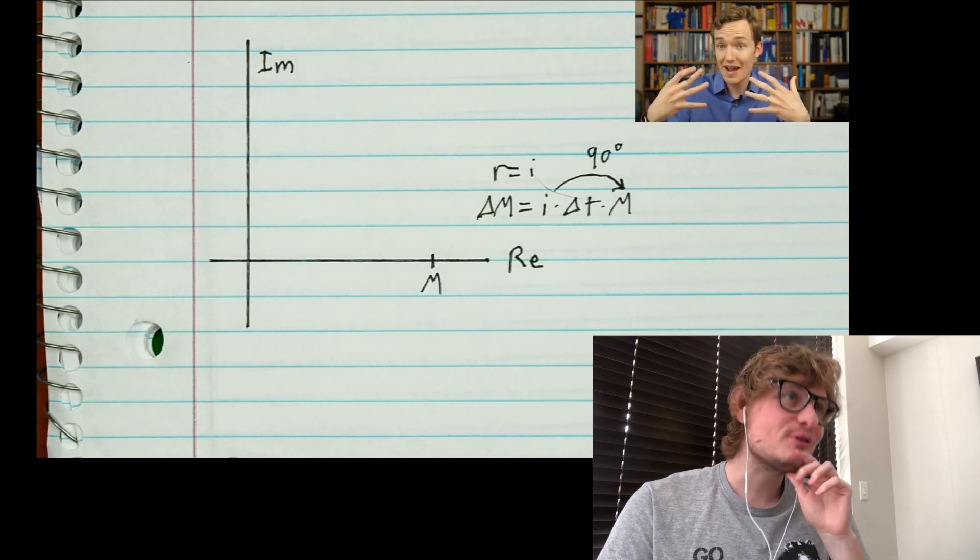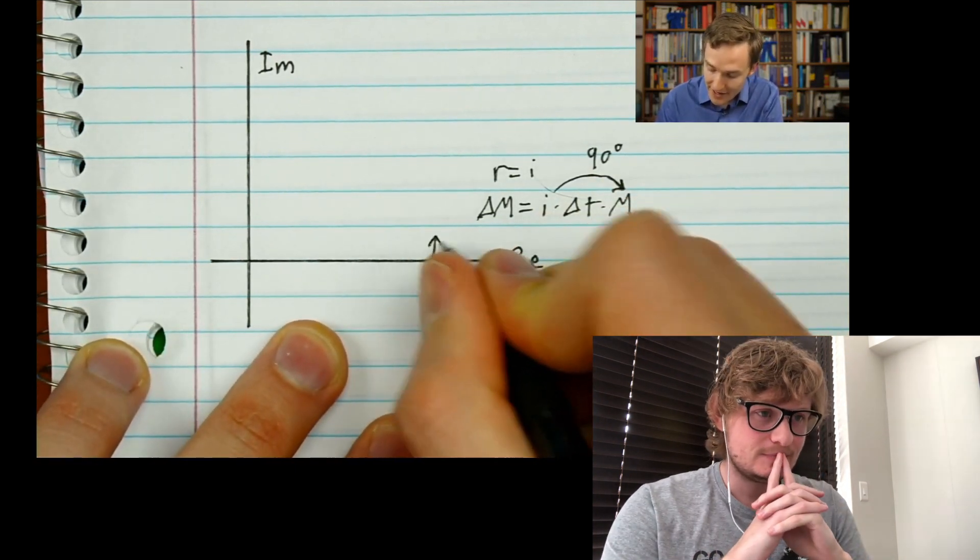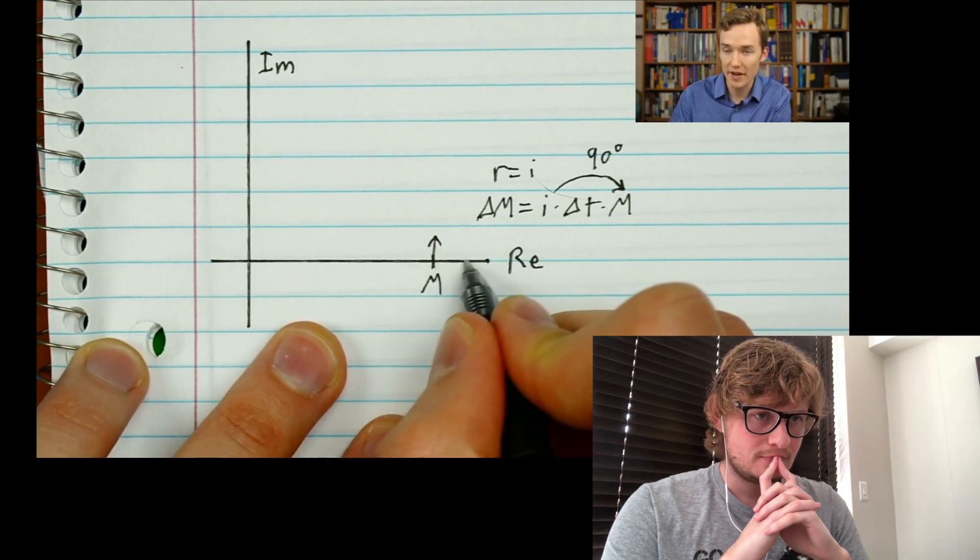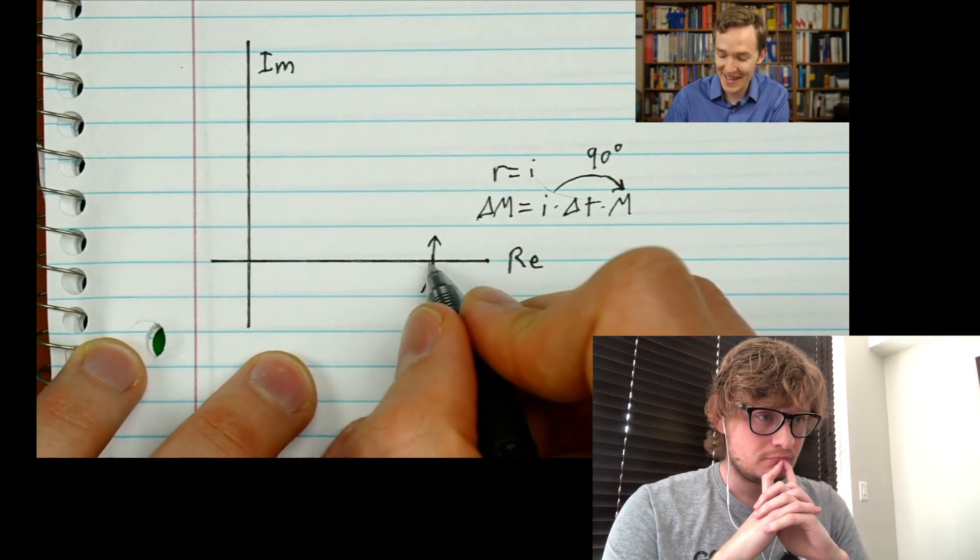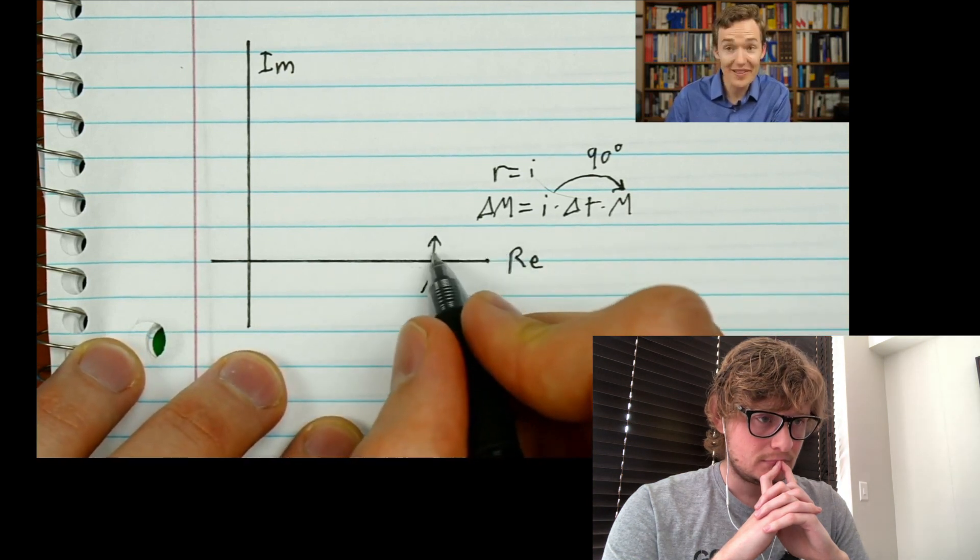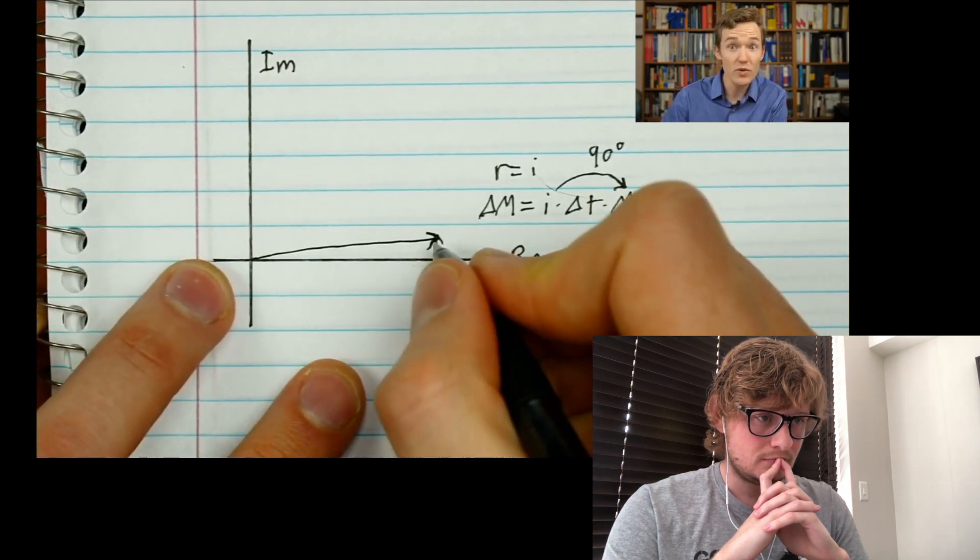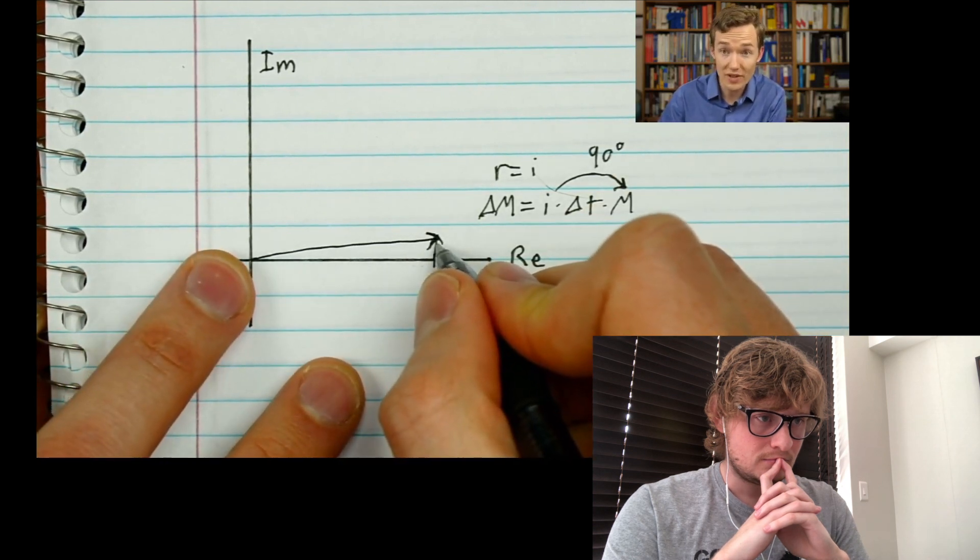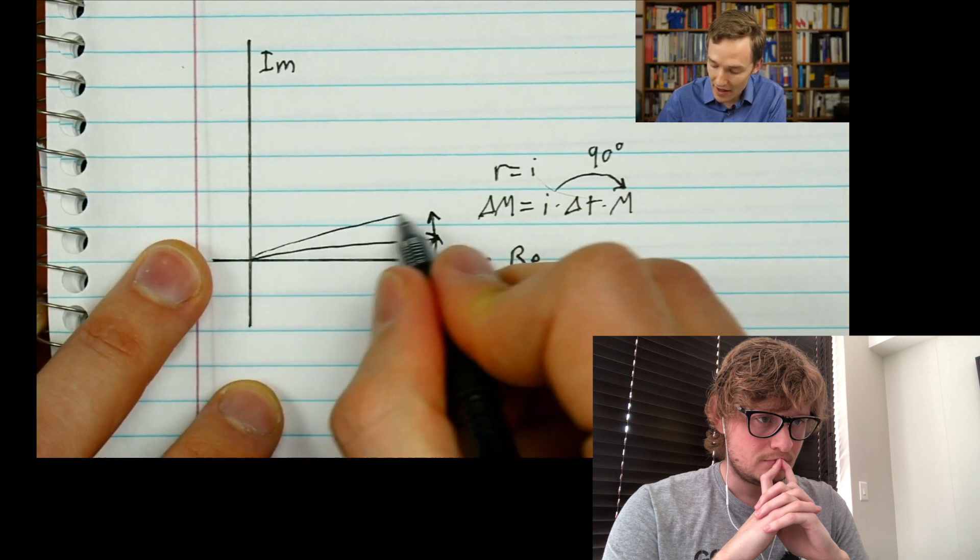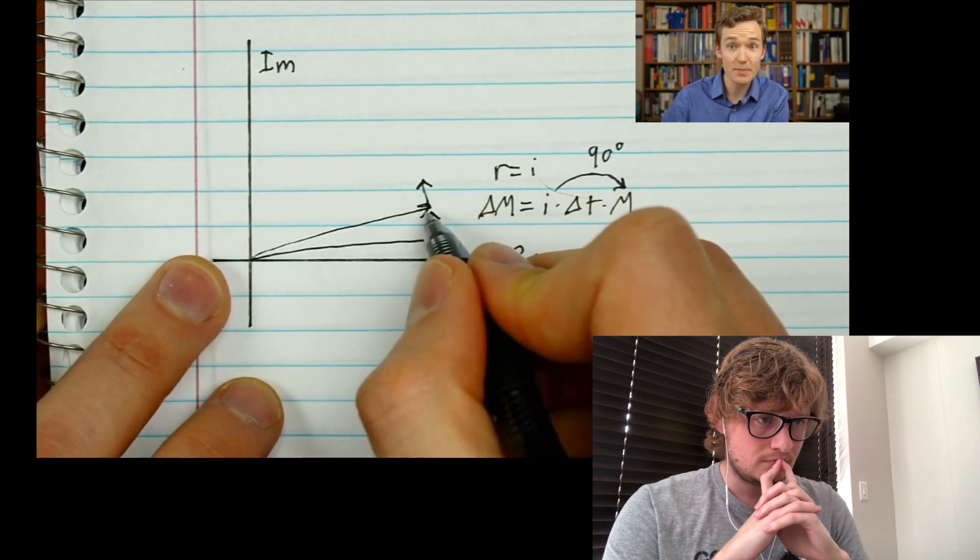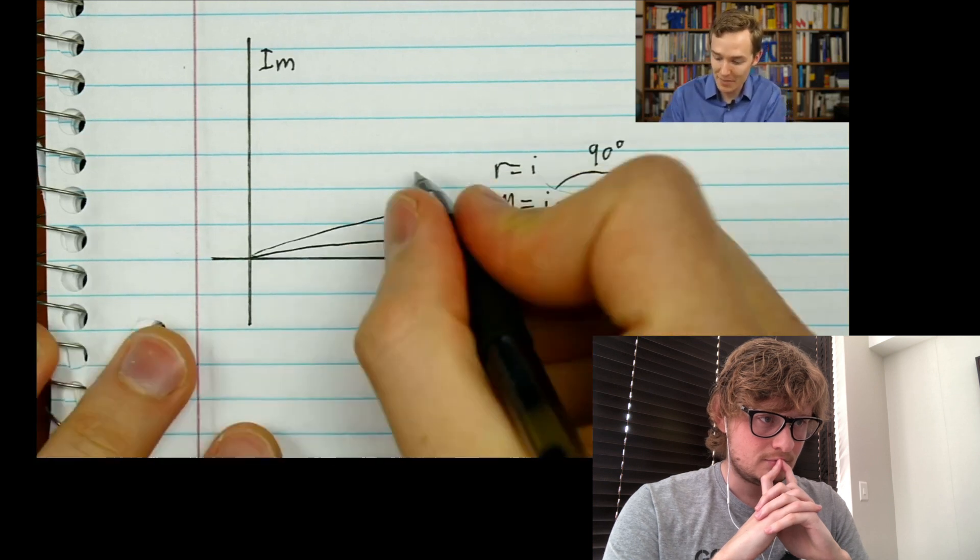The video continues: The change to your money is going to be a little arrow that's not increasing the money, you're not growing, you're not decreasing the money, it's not a negative interest rate, it's moving somehow perpendicular to where the money already is. So after a little step in time, you end up with a little bit of imaginary money. And now from that point, when you do another time step, it does the same thing. It takes the vector that you've newly landed on and it rotates at 90 degrees. At each point you're looking at what is your money number that has some real part and some imaginary part, you rotate it 90 degrees and you add a little step on that.